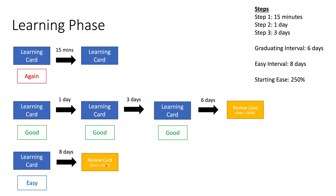Why is our ease 250%? In your settings you can determine what you want your starting ease to be. The default in Anki is 250%, which is fine. This can change in the future depending on whether you hit Good, Hard, or Easy once it's a review card — but this only affects review cards. Learning cards don't have any ease associated with them, so you don't need to worry about ease problems until we talk about the review phase.